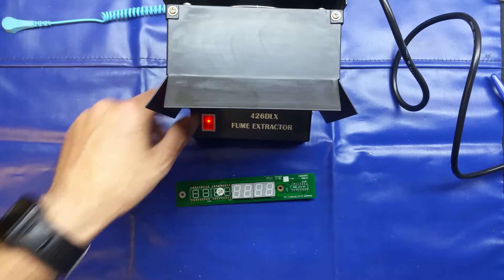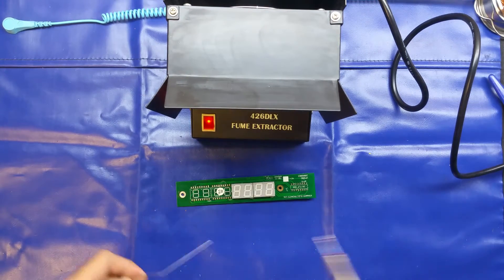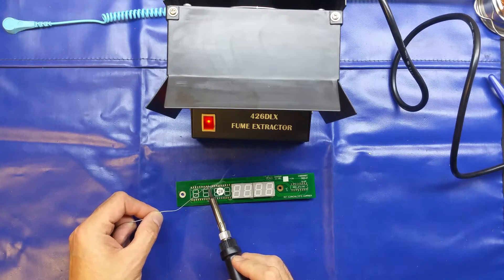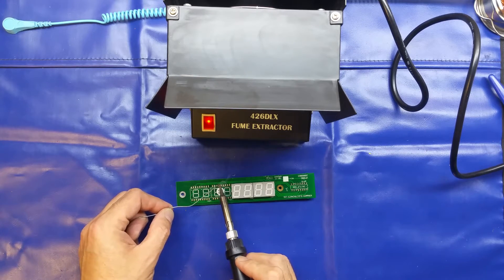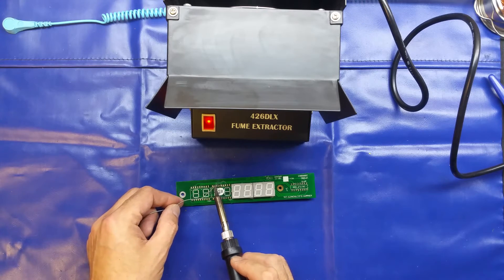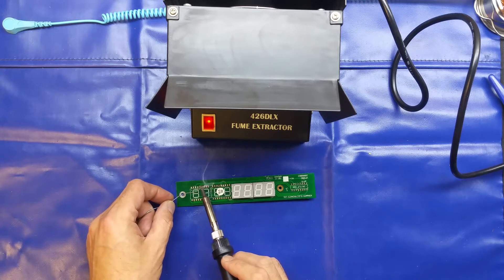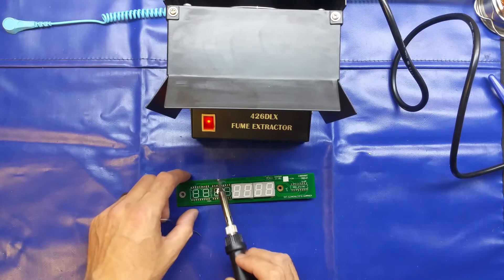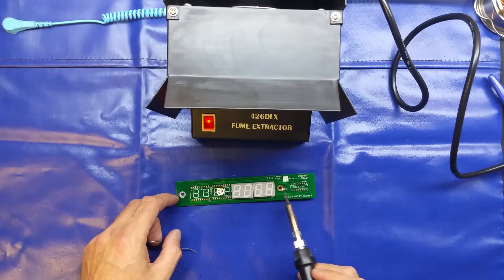So, hopefully you'll be able to see this working. I'll just clean the iron. I'll just tin these pads, and you should be able to see the smoke there just going straight in the front of the unit. And there's no smoke coming back out at the top of the unit. So, yeah, fairly effective. Okie dokes.